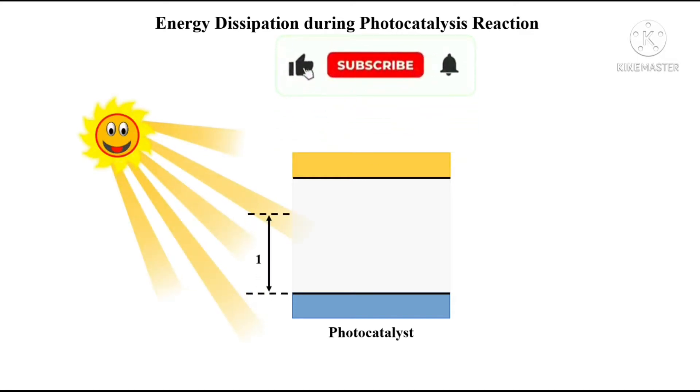So first, the first process contains the losses of photonic energy which is much lower than the band gap of the semiconductor. In detail, I can say, if your semiconductor has a band gap value of 2.3 eV.